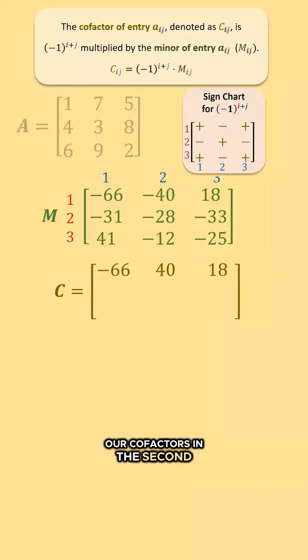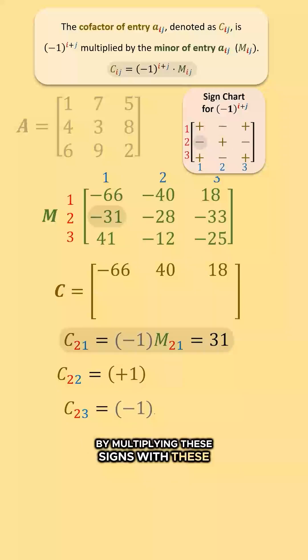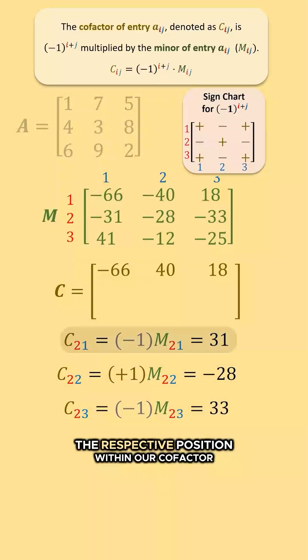We get our cofactors in the second row, capital C sub 21, capital C sub 22, and capital C sub 23, by multiplying these signs with these minors. We insert their values into their respective position within our cofactor matrix.